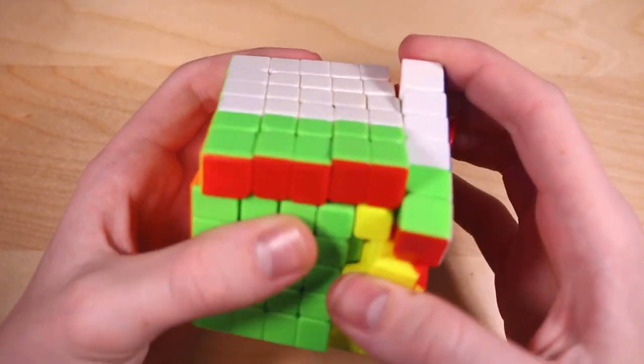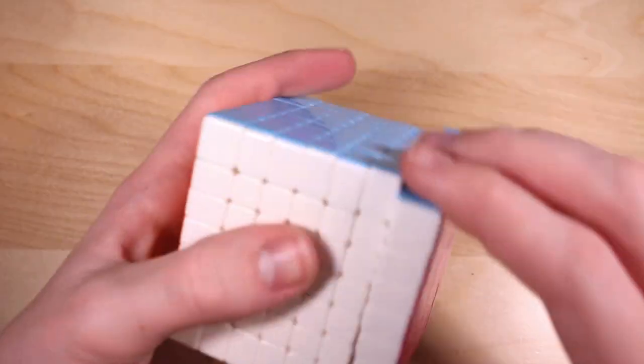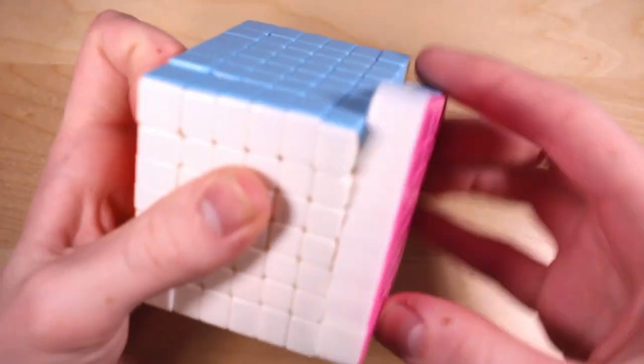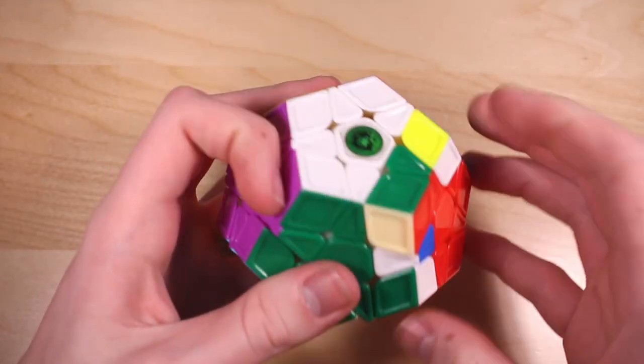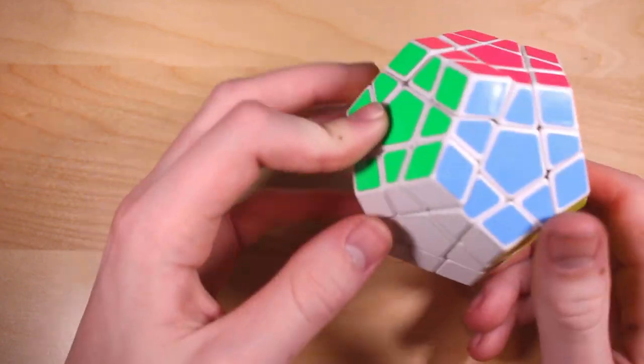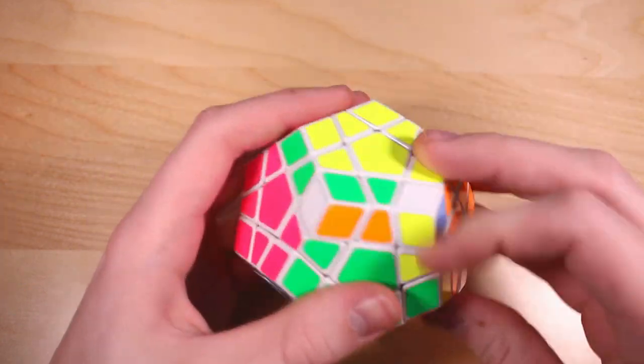Qi Yi Wuhua 6x6. Meh, it's an okay 6x6. MoYu Cubic Aofu GT 7x7. I still think this is a really good cube. Qi Yi Galaxy Megaminx version 1. Awesome Megaminx. Shengxiao Megaminx that I re-stickered so the opposite sides are the same. Doesn't turn very well.